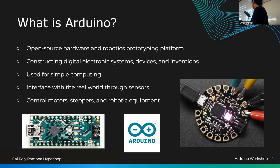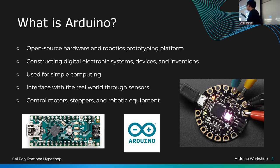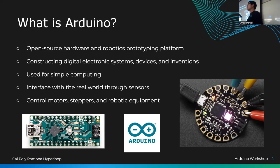Arduino is also used for simple computing — not just hardware but software too. We talk about inputs and outputs and interfacing with electronics. Inputs are things like a barometer, air pressure sensor, temperature sensor, switches, or buttons — things that provide the computer with a signal. Outputs include motors and robotic equipment. Putting this together, we get a control system: taking inputs and causing some output signal.